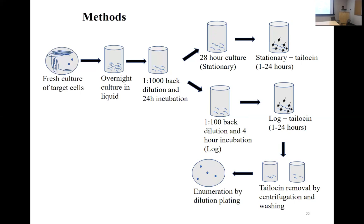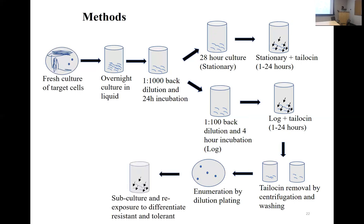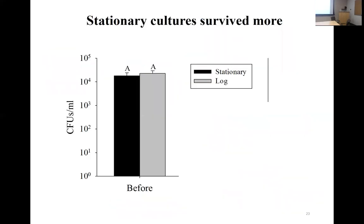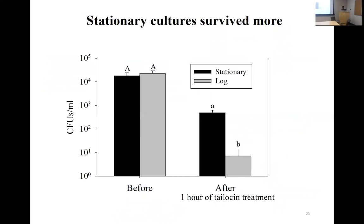The surviving cells could be either resistant or tolerant. To confirm this, we do a re-exposure of surviving colonies. Looking at results: the y-axis shows bacterial cell numbers. Before treatment, there is no difference in cell numbers between stationary and log cultures. After one hour of tailocin treatment, there is a clear difference — stationary phase shows almost a 90% population reduction with many cells still surviving, while log phase has fewer surviving cells but still some survival.